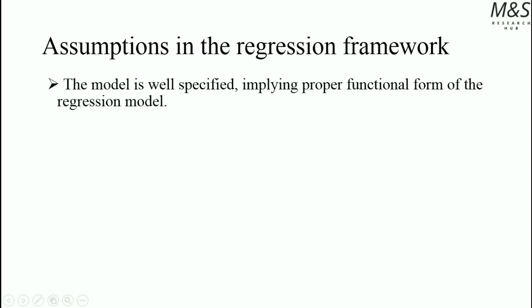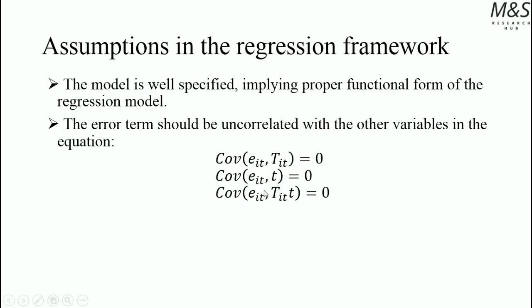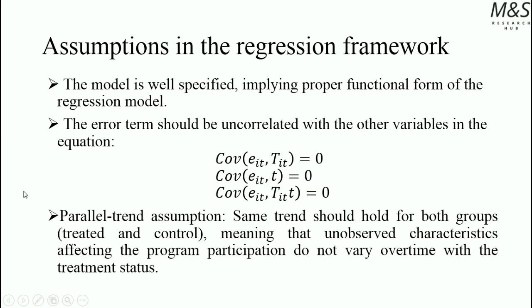Assumptions in the regression framework: the model must be well specified, implying that the proper functional form must be assumed, meaning it should be close to the data-generating process. The error term should be uncorrelated with other variables in the equation — it should not be correlated with the treatment dummy variable, the time dummy variable, or the interaction term. Additionally, we need the parallel trends assumption, which states that both the treated and control groups follow the same trend — unabsorbed effects and characteristics affecting the program do not vary over time, so both groups follow the same changes in outcomes.